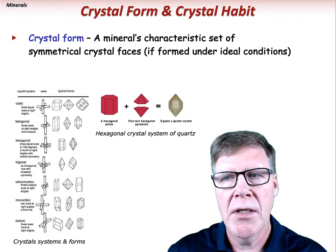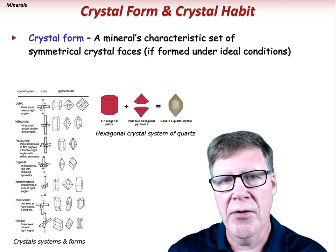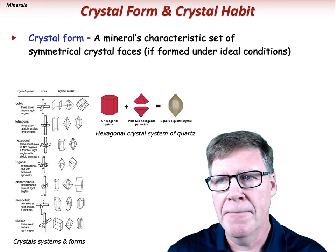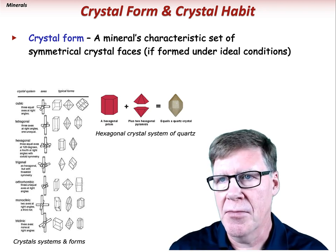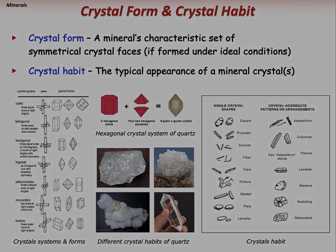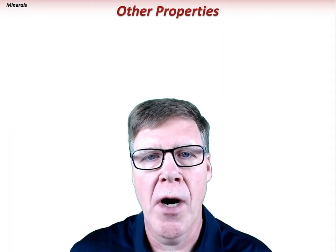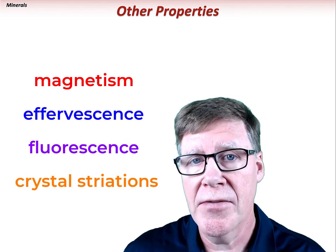Crystal form describes a mineral's characteristic set of symmetrical crystal faces when formed under ideal conditions and allowed to grow freely. There are many different crystal forms belonging to a handful of geometric crystal systems. Crystal habit is the typical appearance of a mineral or cluster of minerals, with descriptive terms including columnar, acicular, bladed, fibrous, and platy.